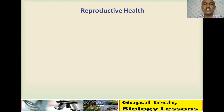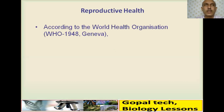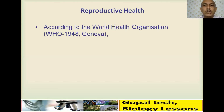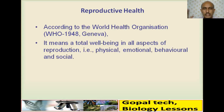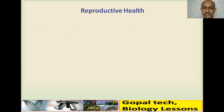Now we come to the next concept: Reproductive Health. According to WHO (World Health Organization), established in Geneva in 1948, reproductive health means total well-being in all aspects of reproduction — being physically fit, emotionally balanced, and having behavioral and social well-being. That is referred to as reproductive health.